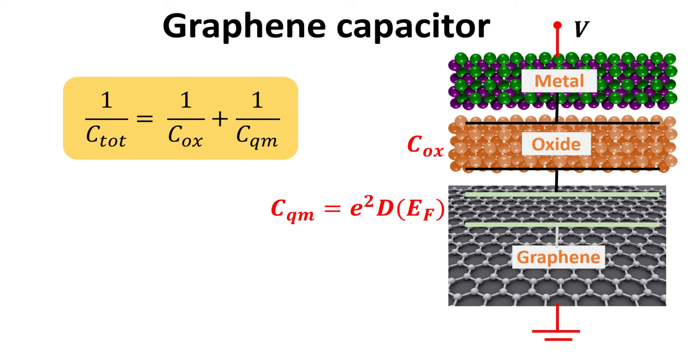In summary, the graphene capacitor as shown on the right, has an equivalent circuit model given by two capacitors in series, C-ox and C-quantum.